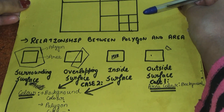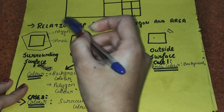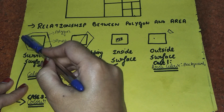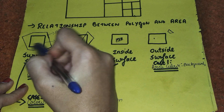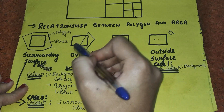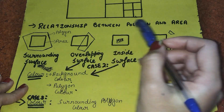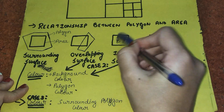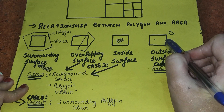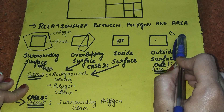There are four types of relationships between a polygon and an area. First, when the polygon completely surrounds the area — the area is marked in black and the polygon in blue. Second, the polygon is overlapping or intersecting with the area. Third, the polygon is completely inside the area. Fourth, the polygon is completely outside the area. These are the four relationships that can exist between a polygon and an area.